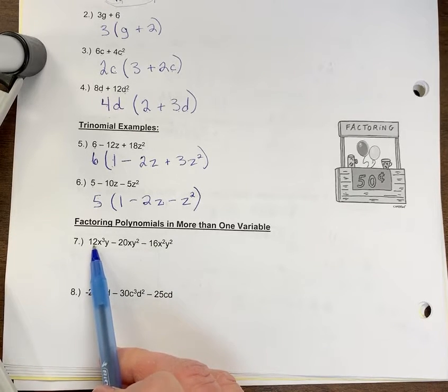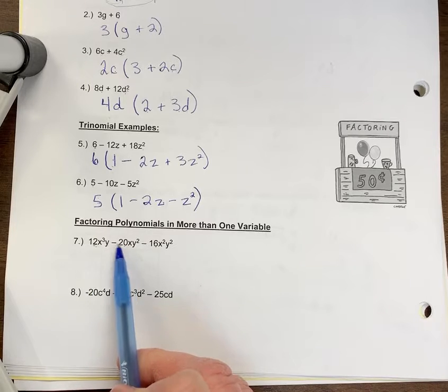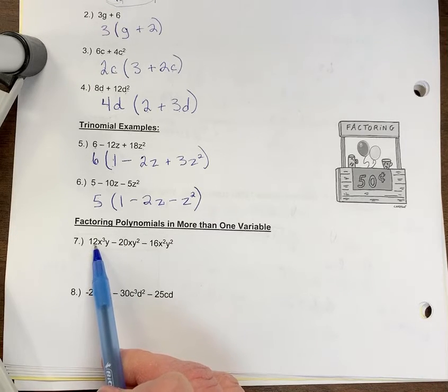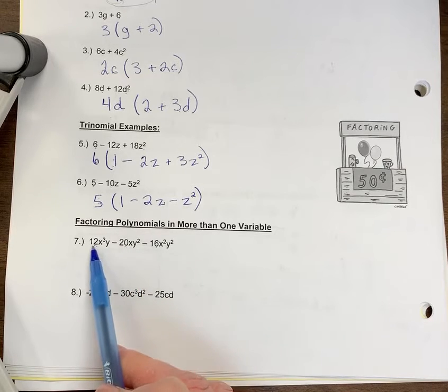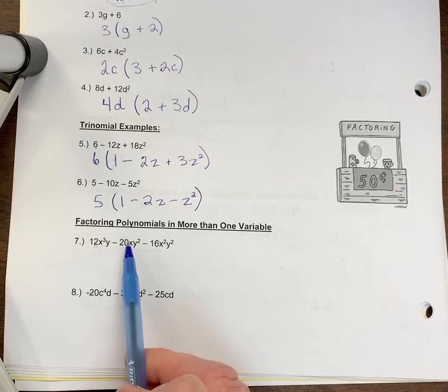If I think of 12, what are some numbers that go in there that are larger? Well, 12 of course. 12 is not divisible by 20, so that doesn't work. I work my way down. Six, but six is not divisible by 20. Four - four is divisible by 20 and 16, so that's my greatest common factor.